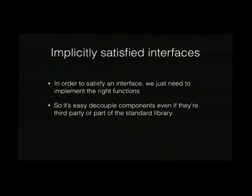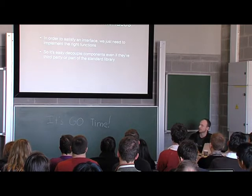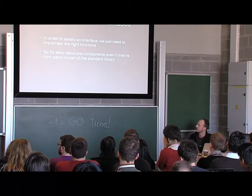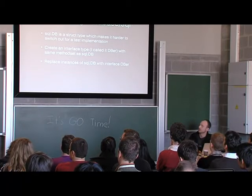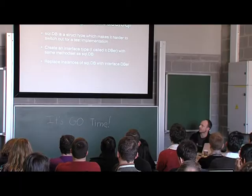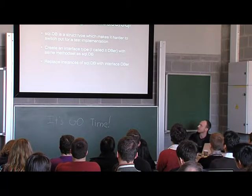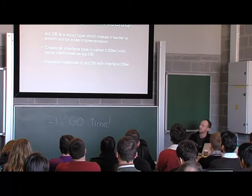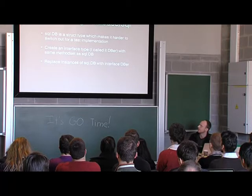One consequence of implicit satisfaction is that if you have some code provided to you, either in the standard library or third-party code, you don't actually have to modify its implementation to create an interface and have it implement that. A good example of this is database/sql. When we started writing our code about a year ago, I found that the actual dependency for talking to the database — the type DB in the sql package — is a struct type. It means when we want to swap it out for something else, you need to either use a different type entirely, or wrap the whole thing in an interface, which is effectively what I did.